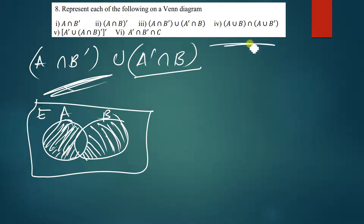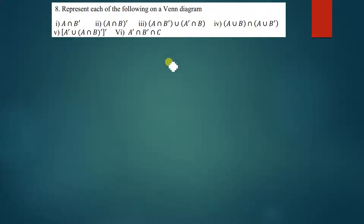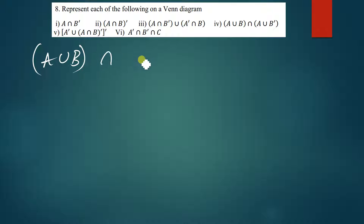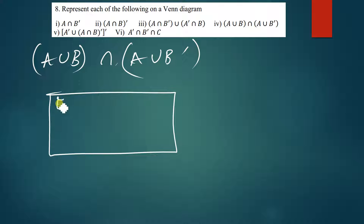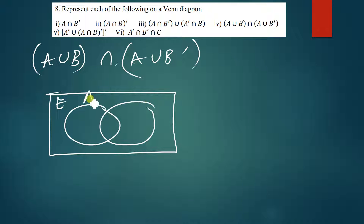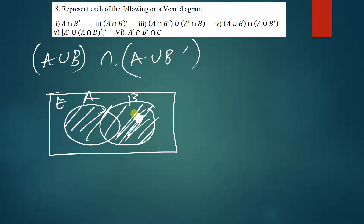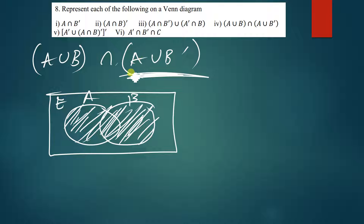Let's quickly move on to the next one — a very simple question: (A union B) intersection (A union B complement). We draw the Venn diagram, shade A union B — A is this, B is this, so A union B is just this part. Now we're trying to find the intersection between this and A union B complement.